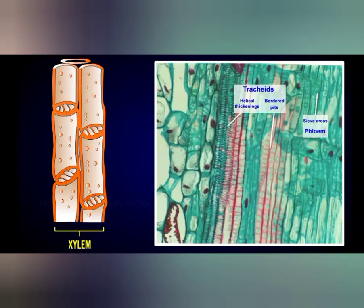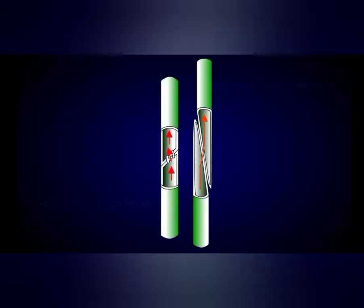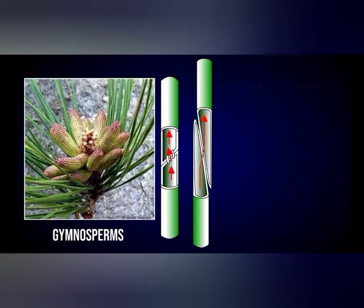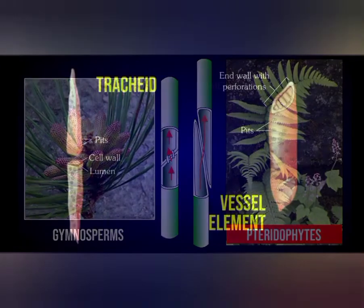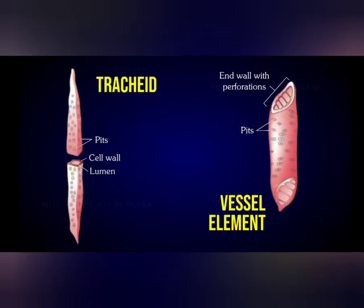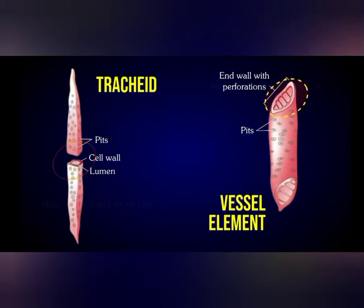The main important function of tracheids is transportation of water, and water always gets transported in one direction — that is from roots to the shoot or stem. In pteridophytes, ferns and gymnosperms, tracheids are the most important elements in transportation of water.